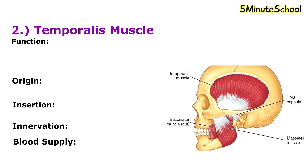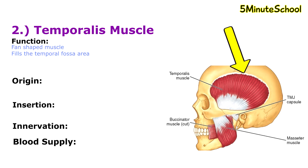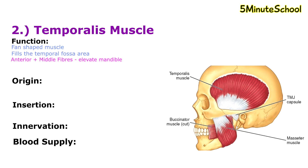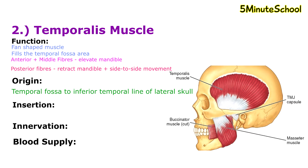The next muscle is the temporalis muscle. This is a fan-shaped muscle that fills the temporal fossa area. The anterior part of the muscle has fibers with vertical orientation, the mid fibers have an oblique or diagonal orientation, and the posterior fibers have a horizontal orientation. The anterior and middle fibers help to elevate the mandible, while the posterior fibers help to retract the mandible and assist with side-to-side movements.